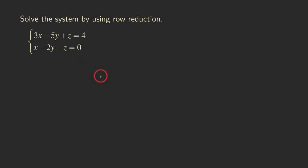Hello everyone, it's Wilson here. Today let's talk about a system that has infinitely many solutions. We are going to first solve the system using row reduction, then talk about how to write down the answer, and after that we are going to talk about the geometric interpretation for what that answer represents. So let's get started right now.